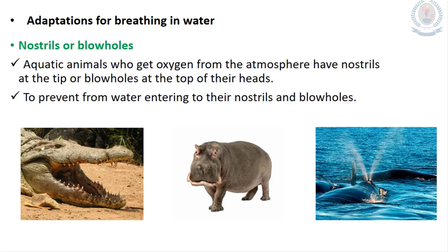Adaptations for breathing in water: aquatic animals that get oxygen from the atmosphere have nostrils at the tip or blow holes at the top of their heads. Crocodiles and hippopotamuses have nostrils at the tip, and whales have blow holes at the top of their heads. This adaptation helps to prevent water from entering into their nostrils and blow holes.